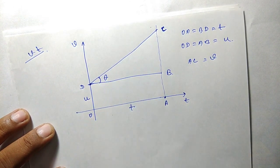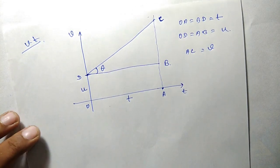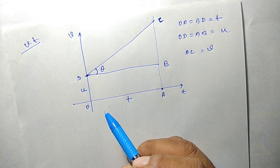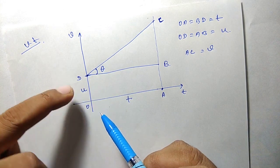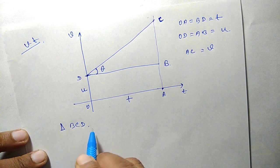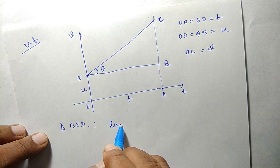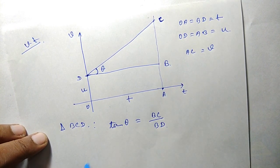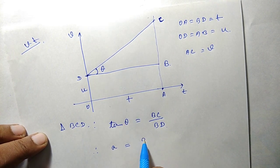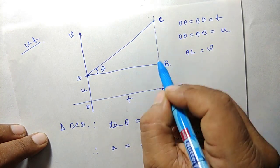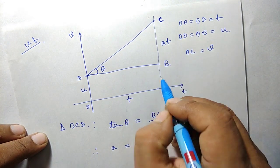Let's say this angle is theta. In the velocity-time graph, the slope represents the acceleration of the body. The slope is the tan of the angle of the graph. Considering the right-angle triangle BCD, tan theta equals perpendicular BC divided by base BD. Since tan theta is the acceleration, acceleration equals BC divided by BD, and BD is time t. This gives BC equals at.